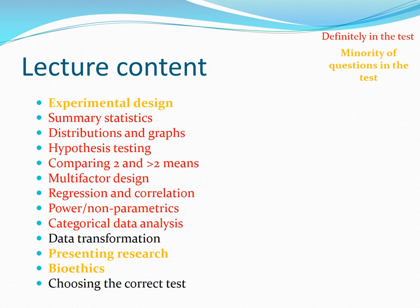I've colour-coded things for you. In red — from summary statistics down to categorical data analysis — this is all definitely going to be in the final test. This is a large part of what you've been doing on the module. It's not all stats; research skills like ethics, sustainability, and presenting your research feature as well. The bulk of the module has been about processing your data to prepare you for your final year projects. These red-coloured themes are things to revise in a lot of detail. Experimental design, presenting research, and bioethics are less important — a minority of questions.